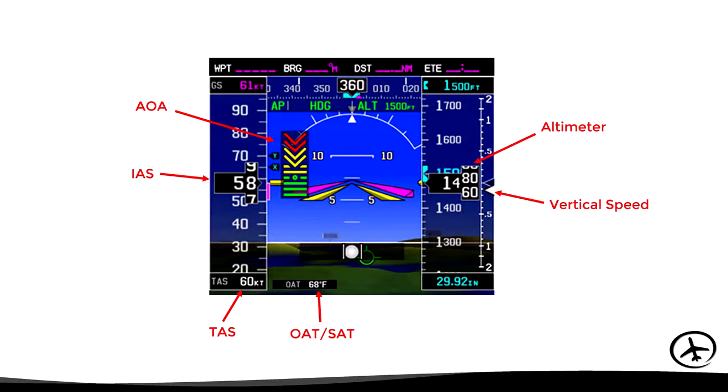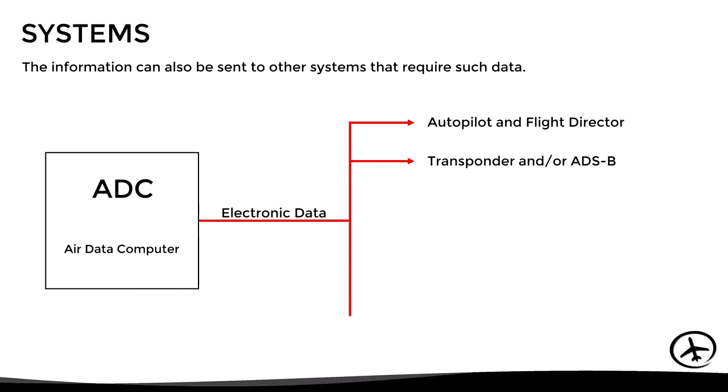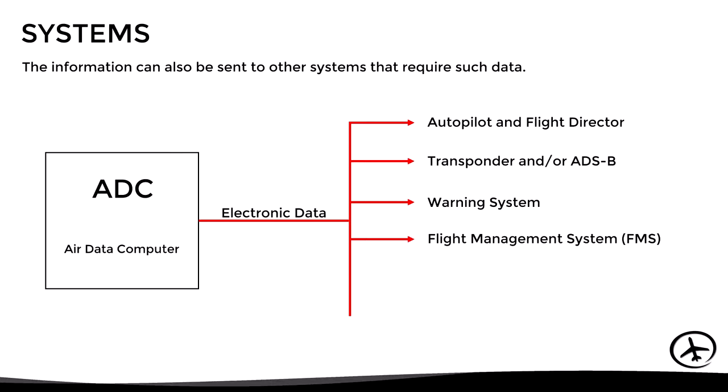The information processed by the ADC is not only sent to the flight instruments — it can also be sent to other systems that require such data. For example, the autopilot and flight director system, the transponder and ADS-B, the monitoring and warning system, and the flight management system.